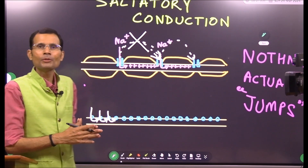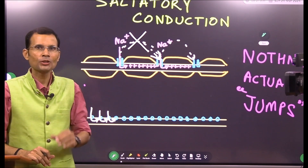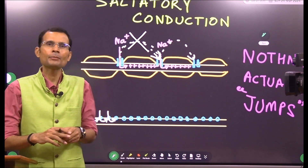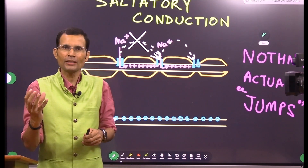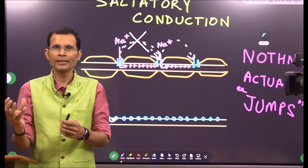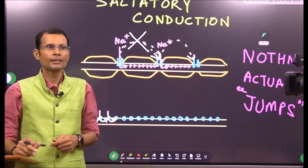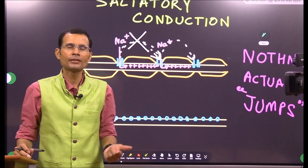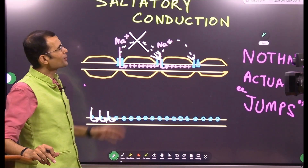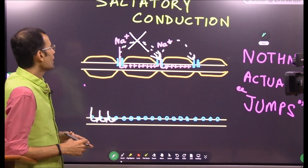So I asked him: what actually jumps? The student was a little perplexed. He said 'impulse.' I asked him — impulse? Is it like a frog or something, is it a physical body to jump? Then he said sodium ions, charges. Let's understand all this concept and this business of jumping.